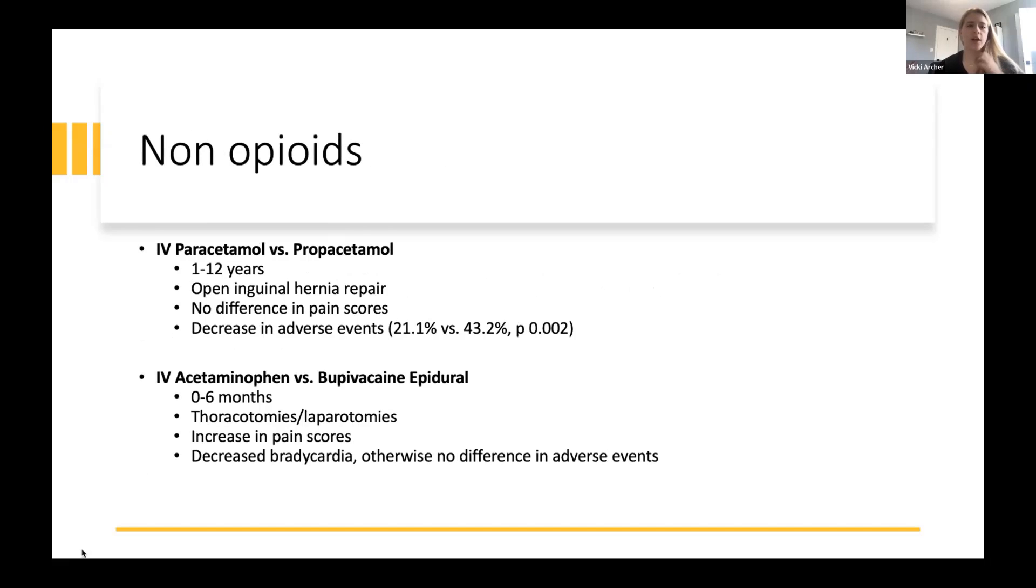For our non-opioid trials, when IV paracetamol was compared to proparacetamol in children aged 1 to 12 after open inguinal hernia repair, there was no difference in pain score but a decrease in adverse events. When IV acetaminophen was compared to bupivacaine epidurals in infants age 0 to 6 months after thoracotomies and laparotomies, there was an increase in pain scores and decreased bradycardia. Although none of this bradycardia required intervention and was not felt to be clinically significant by the authors, otherwise there was no difference in adverse events.